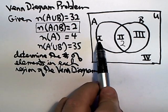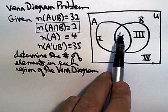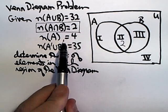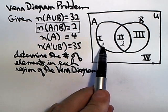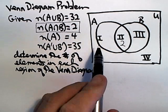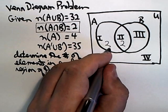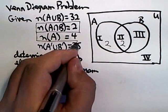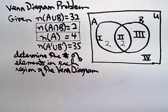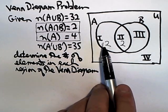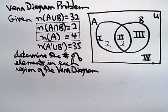As we move our way out, we might want to look at the entire circle A because we know that there are four elements within the entire circle A. If two of them are already accounted for, that means there must be two more in order to make the four elements inside the circle A. So region 1 must also have two elements in it.